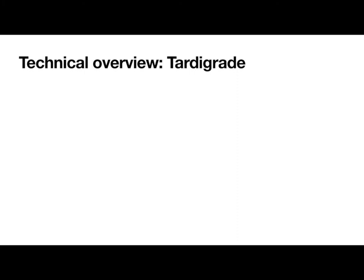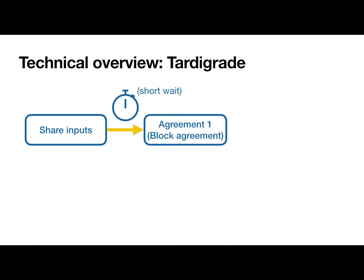Okay, now we're ready to fill in some more details. During the initial input sharing phase, I have two timers running. If I'm able to form a pre-block by the time the first timer goes off, I'll input it to the first agreement sub-protocol, which we call block agreement.